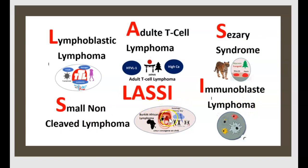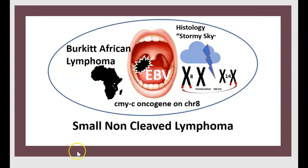Burkitt tumor belongs to small non-cleaved lymphoma. Key features of Burkitt lymphoma: small non-cleaved lymphoma, oncogenesis on chromosome 8, translocation 8-14, and histology showing a stormy-sky pattern.